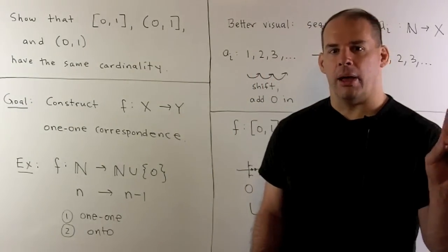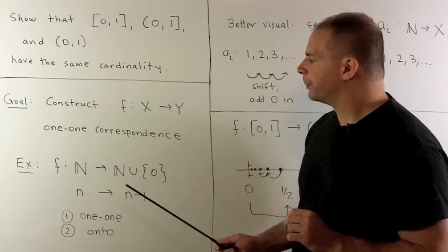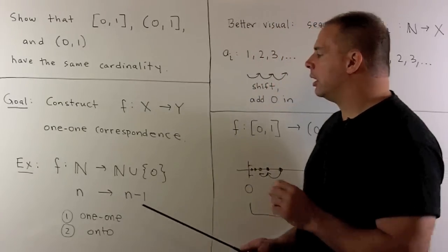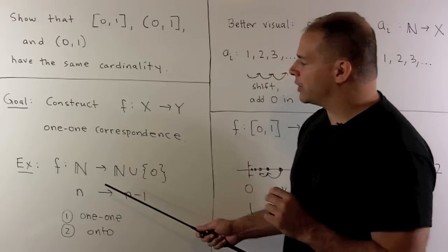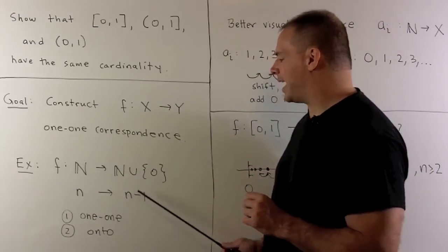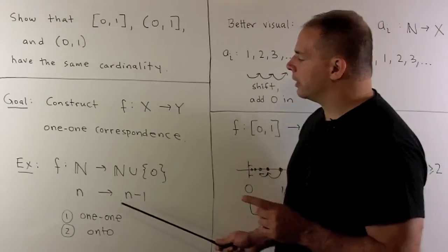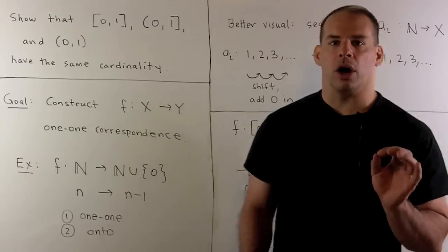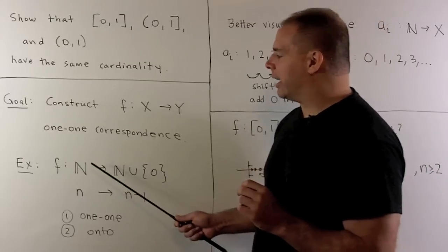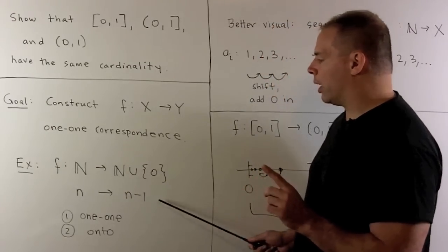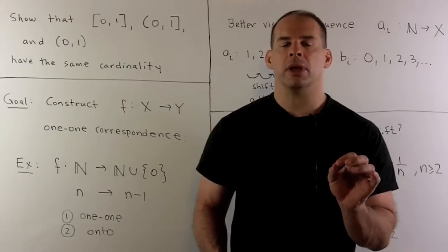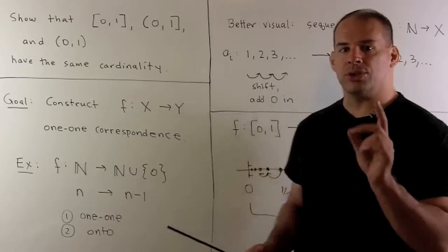Here's an example that will be helpful for the solution. If I take the natural numbers starting at 1, we have a one-to-one correspondence between the natural numbers and the natural numbers including 0, by setting n maps to n minus 1. These two sets have the same cardinality — we're relabeling each point by going to the point one less: 1 maps to 0, 2 maps to 1, 3 maps to 2, and so on. All labels get used exactly once.